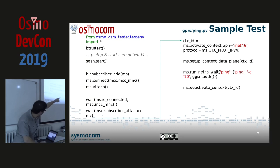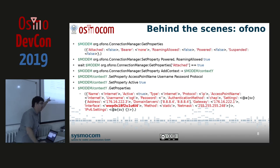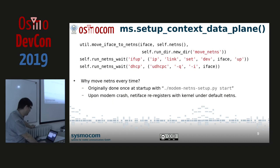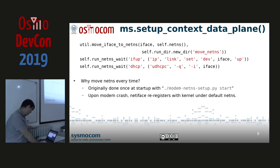Coming back to the setupContextDataPlane function — at this point we know the interface name from that modem, so we know which interface to move to our network namespace. We also know the network namespace name to use. So we just move it — I'll explain how we do that — calling this function which moves the network interface to the selected network namespace. Then we set up the new network namespace and the modem interface: we bring up the network interface and run DHCP on it.